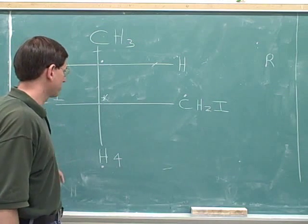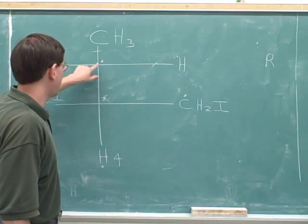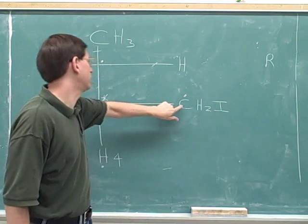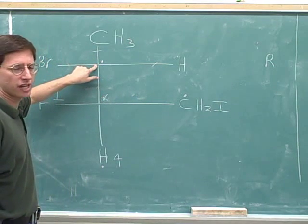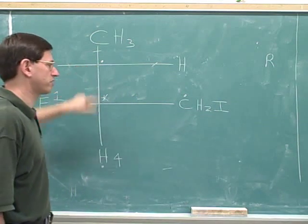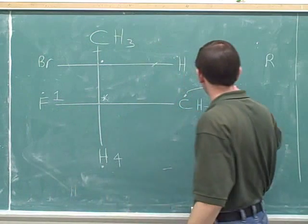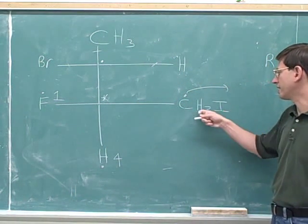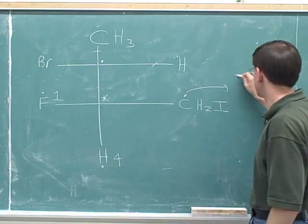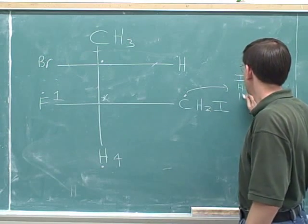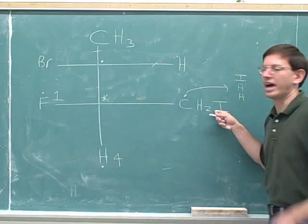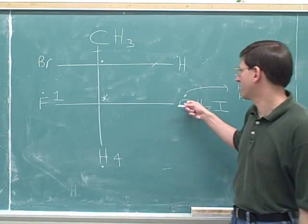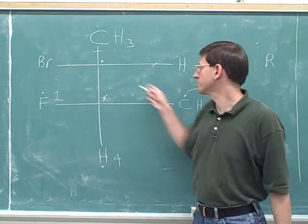So fluorine is number one and hydrogen is number four. Now there's a tie between this carbon and this carbon. Remember that this intersection is a carbon, so we have to make a list of the three atoms that those two dotted carbons are attached to. This carbon is attached to an iodine and two hydrogens. Now the iodine comes into play, but only when we're comparing these two groups.